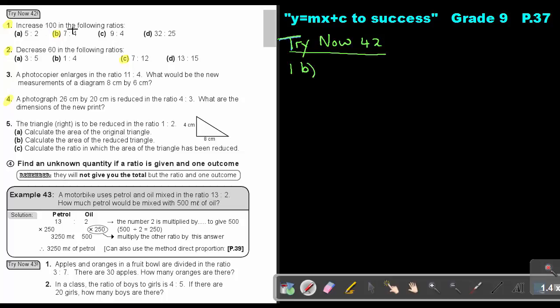So increase 100 in the following ratio. If it's increased, because the ratio is 7 to 4, I will put the big one over the small one and I will just multiply it with 100.